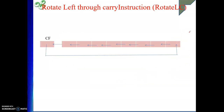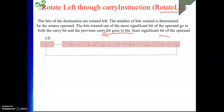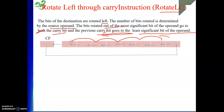The next instruction is rotate left through carry, mnemonic Rotate LC. The direction is changed to left — bits rotate to the left, and the LSB position is vacated. That vacated position is filled up by the previous value of carry, and carry then takes the value of the going-out bit from the MSB. So the bits rotated out of the MSB go to the carry bit, and the previous carry bit goes to the least significant bit of the operand.